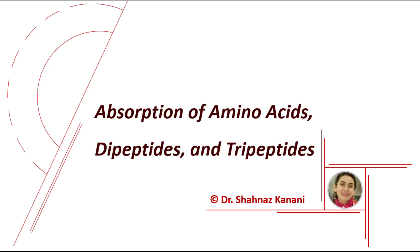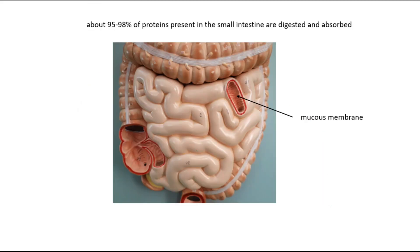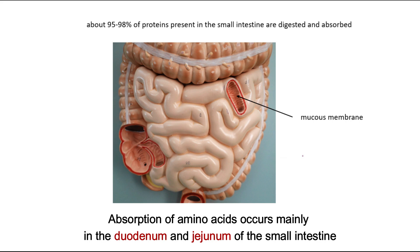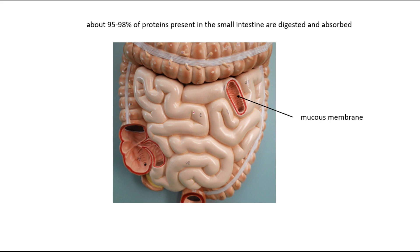When it comes to digestion of proteins, we end up with mostly amino acid molecules. Most of the absorption of amino acids happens in the beginning of the small intestine, which is the duodenum, and the middle section of the small intestine, which is the jejunum. Basically, 95 to 98% of proteins present in the small intestine will be digested, and eventually we absorb the amino acid molecules, mostly in the duodenum and jejunum.